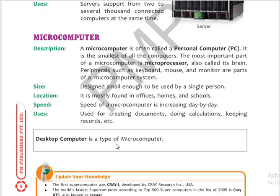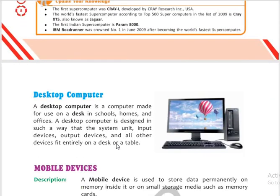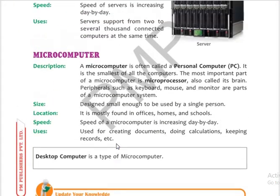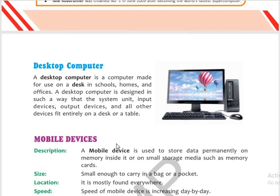Desktop computer is also a type of microcomputer. There is not much difference between a desktop computer and a microcomputer. A desktop computer is a computer made for use on a desk. It is designed so that the system unit, input devices, output devices, and all other devices fit entirely on a table. It is used in schools, homes, and offices.